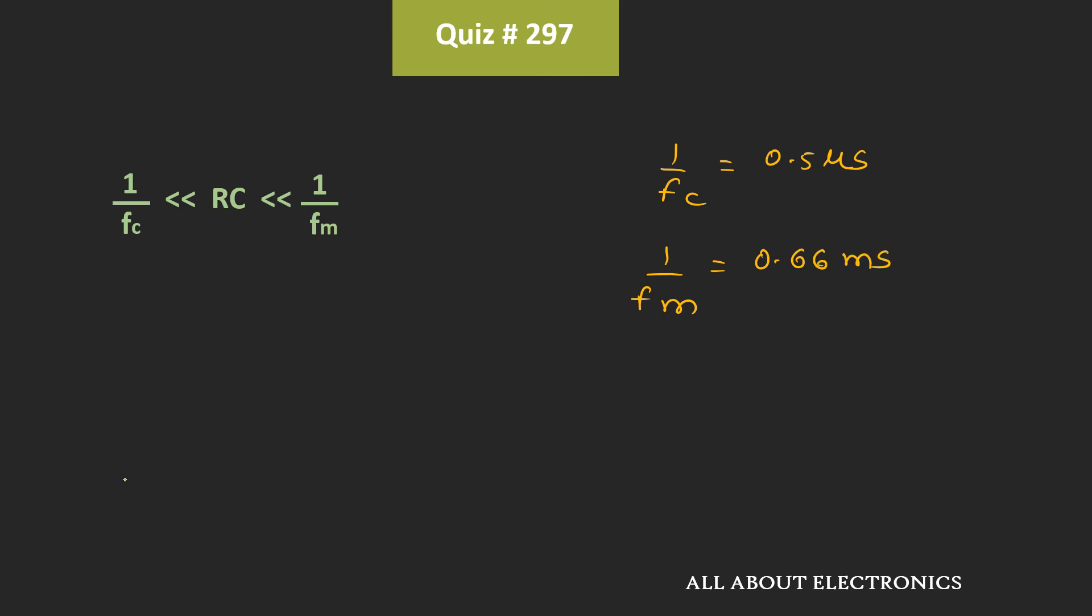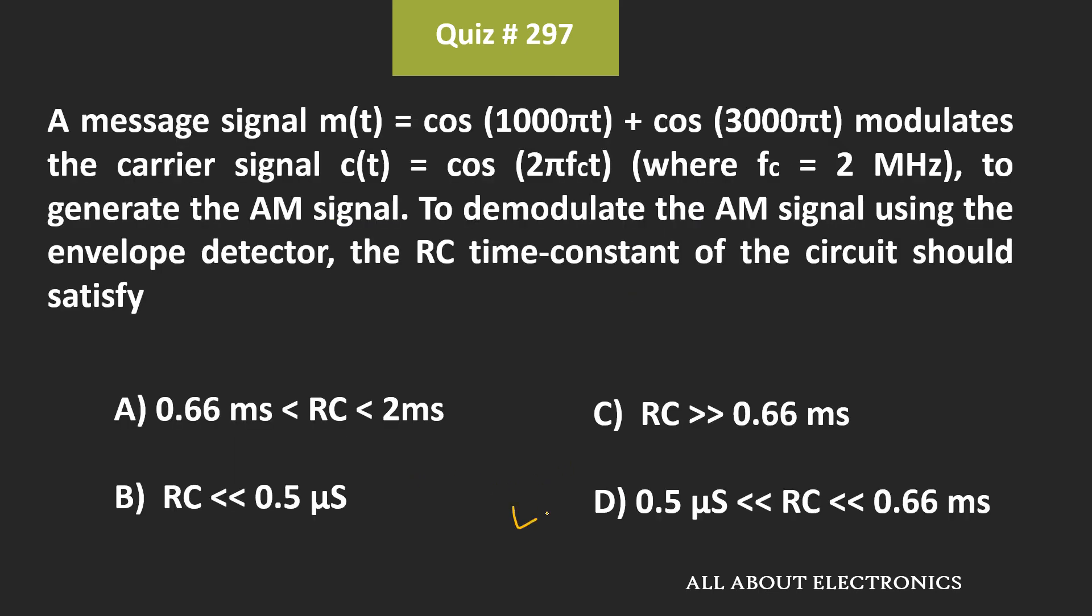That means the condition for the RC time constant of this envelope detector is RC time constant should be much less than 0.66 ms and it should be greater than 0.5 microsecond. That means from this, we can say that for the given question, D is the correct answer.